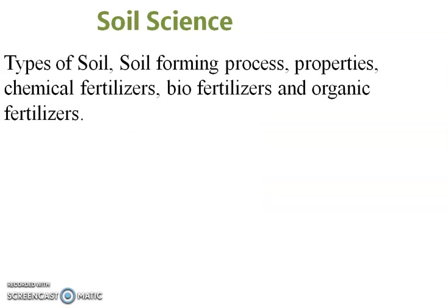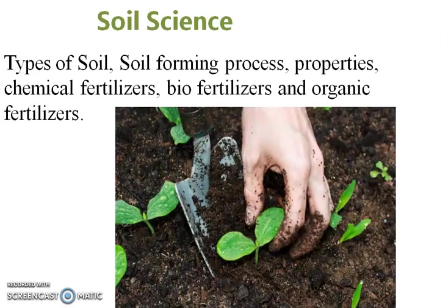The next subject is Soil Science. Soil Science covers types of soil — such as acidic soil, alkaline soil, and saline soil — soil forming processes, soil properties, and chemical fertilizers. You learn what chemical fertilizers are, the different types, which fertilizer to apply to which soil, and also bio-fertilizers and organic fertilizers. All this knowledge is provided in the subject Soil Science.